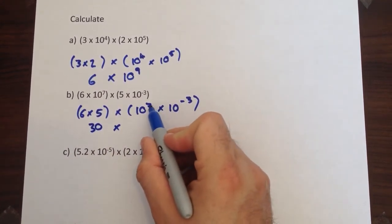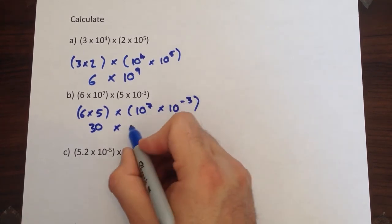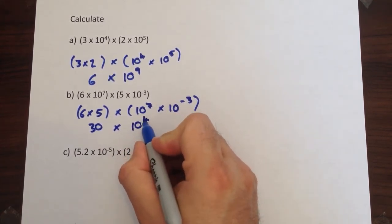Add the index numbers: 7 add negative 3. Well adding a negative number is the same as taking it away, so that becomes 10 to the power of 4.